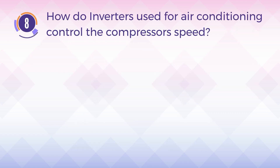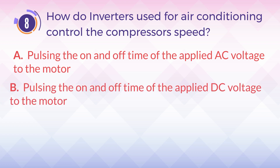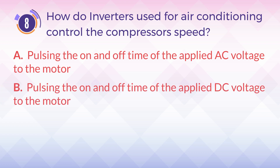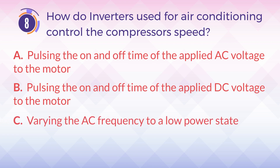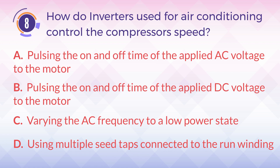Number 8. How do inverters used for air conditioning control the compressor's speed? A. Pulsing the on and off time of the applied AC voltage to the motor. B. Pulsing the on and off time of the applied DC voltage to the motor. C. Varying the AC frequency to a low power state. D. Using multiple speed taps connected to the run winding.